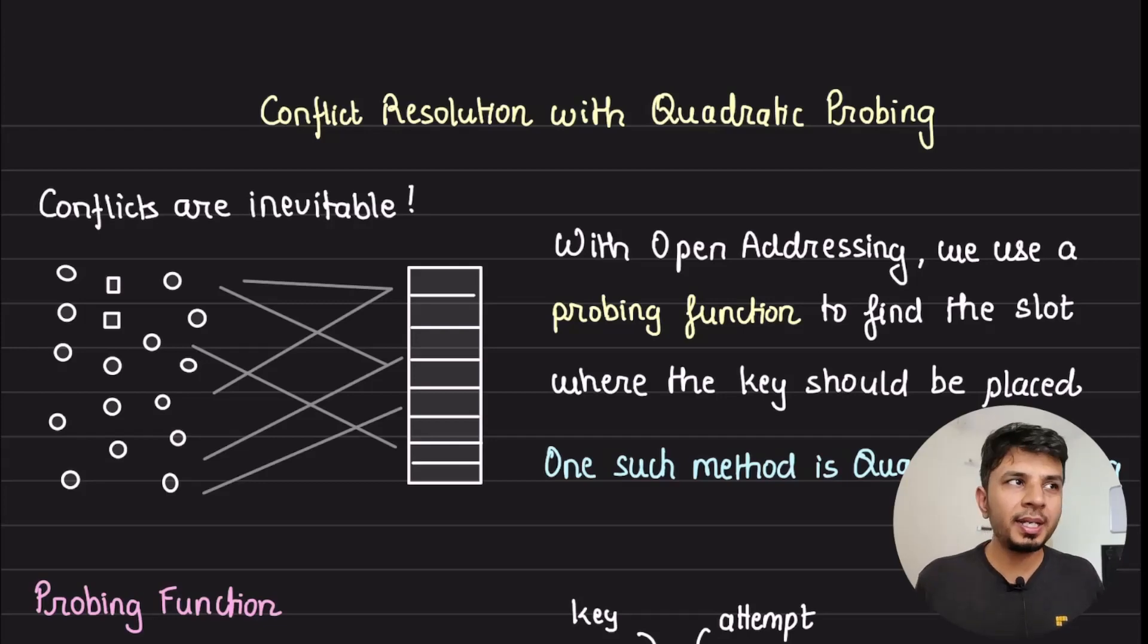In the previous video we looked at linear probing as a way to handle hash table collisions, but is that the only way or can we do something better? In this video we take a look at quadratic probing as an alternative to linear probing.